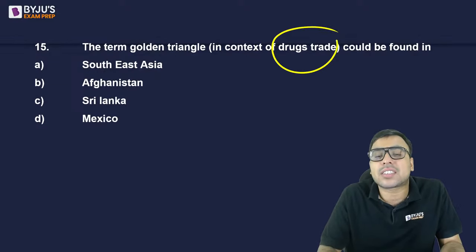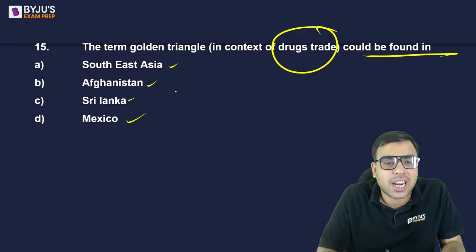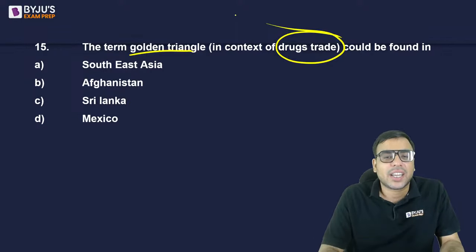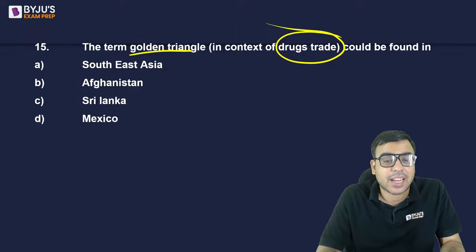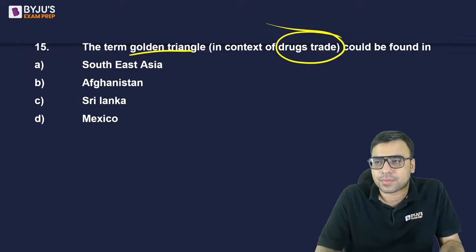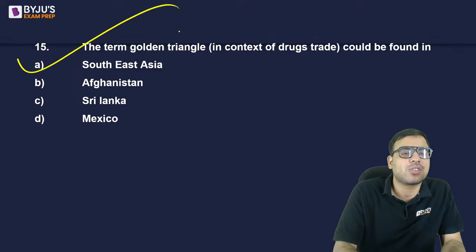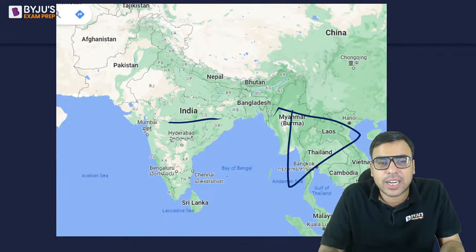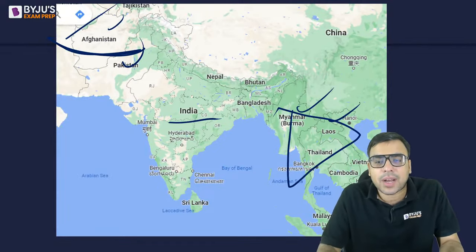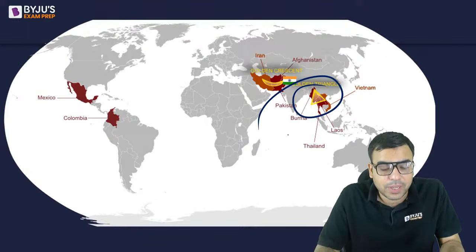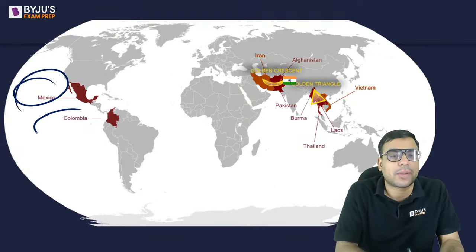The term 'Golden Triangle' in the context of drug trade — where is it found? Southeast Asia, Afghanistan, Sri Lanka, or Mexico? The right answer is Southeast Asia — A. The Golden Triangle covers Myanmar, Laos, and Thailand — these are places known for drug trade. There is also the Golden Crescent in Pakistan's region. Mexico and Colombia are also famous for drug trade.